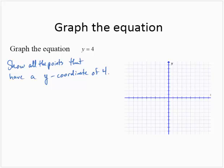Assuming a standard scale of 1 on each axis, one point where the y value is 4 is (0, 4). But it's not the only point — a lot of students will just plot the point (0, 4) and be done with it. But this says show all the points that have a y coordinate of 4, and there are many such points. They form a horizontal line that has a y-intercept of 4.